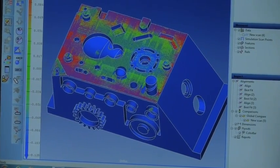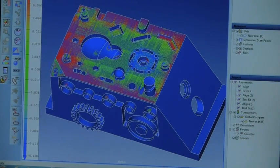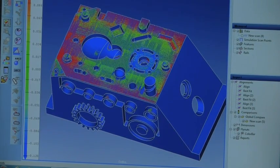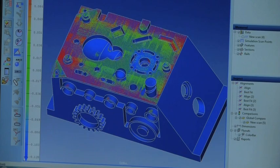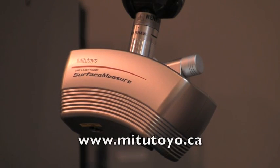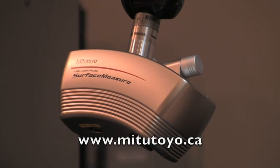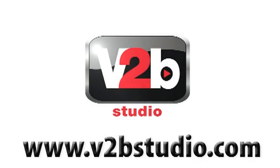In an inspection capacity, it can be used to verify in a matter of seconds that the entire part produced conforms to specific tolerances of an existing CAD model. For more information, visit www.mitutoyo.ca.